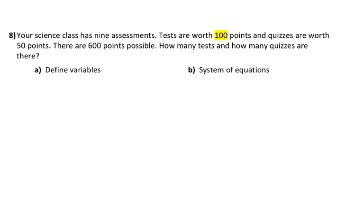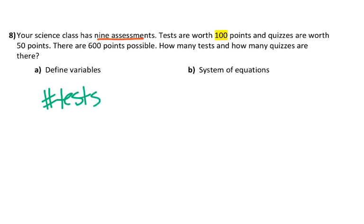Let's try another one. Your science class has nine assessments — tests and quizzes. Tests are worth 100 points and quizzes are worth 50 points, and there are 600 points possible. What is it that I don't know? I know how many points everything is worth, so that's not what my variables stand for. I don't know the number of tests or the number of quizzes. Maybe there were seven tests and two quizzes, or seven quizzes and two tests — I don't know.